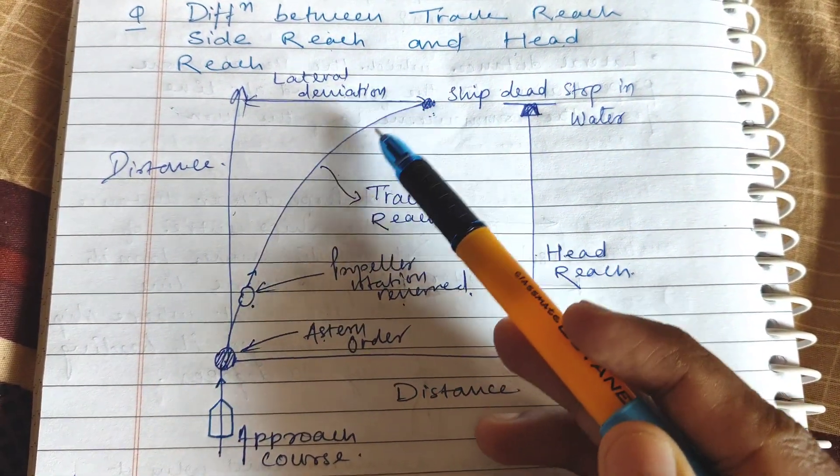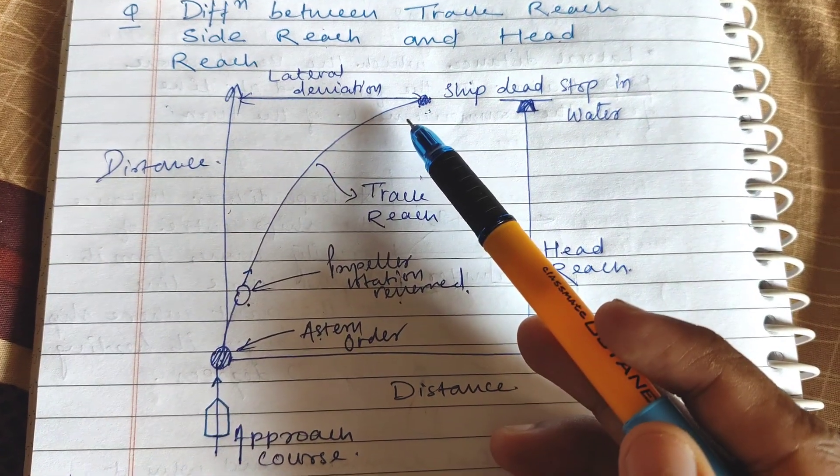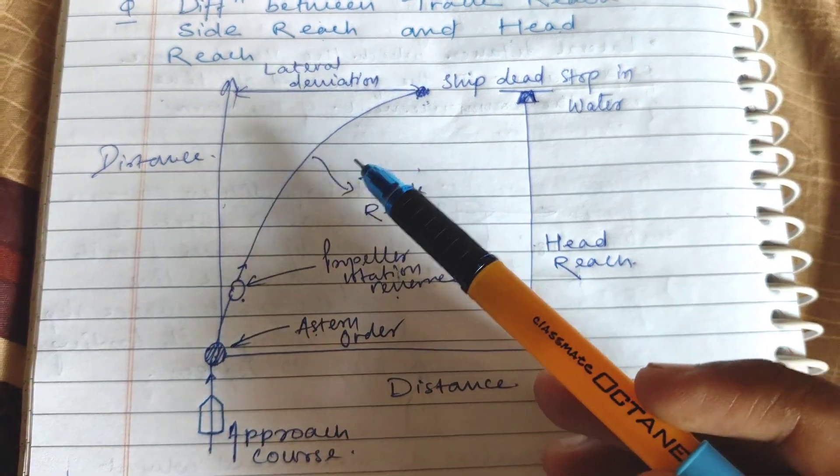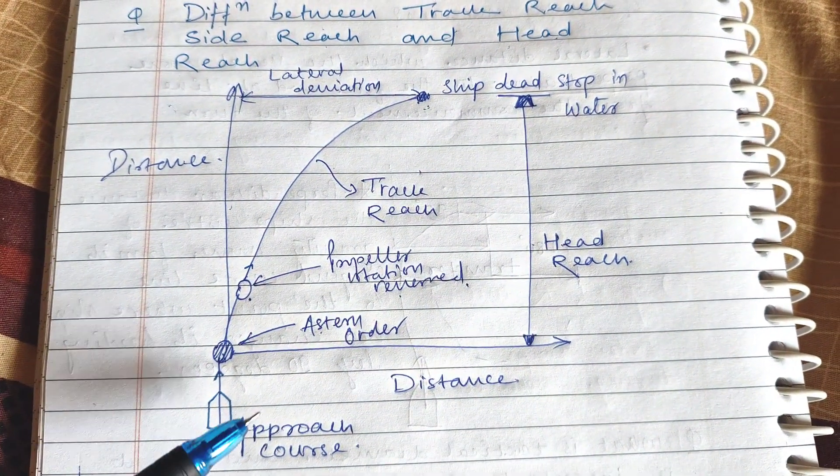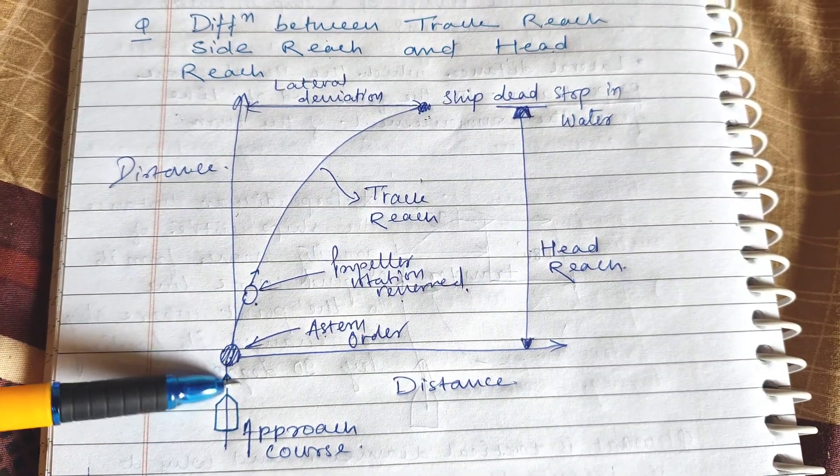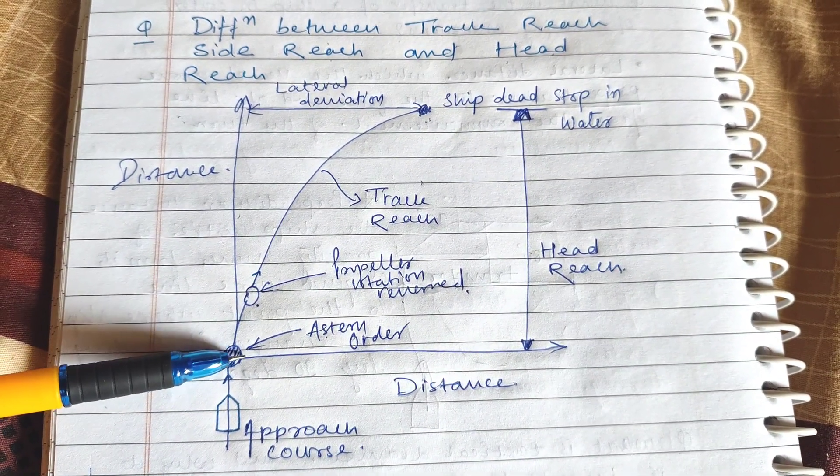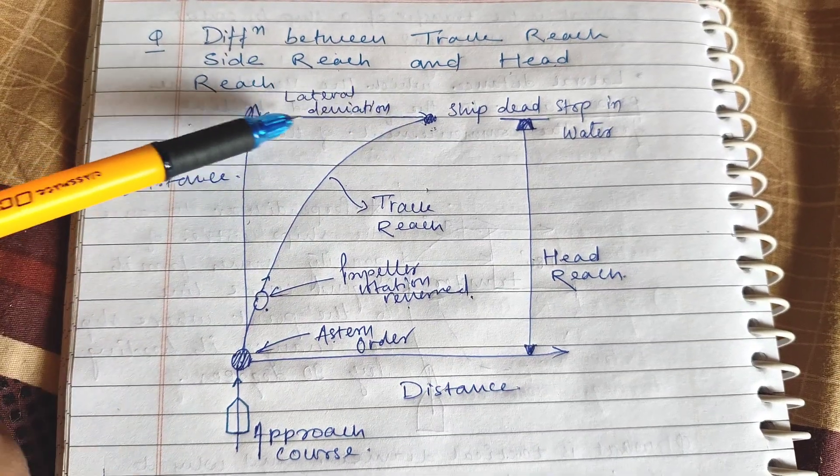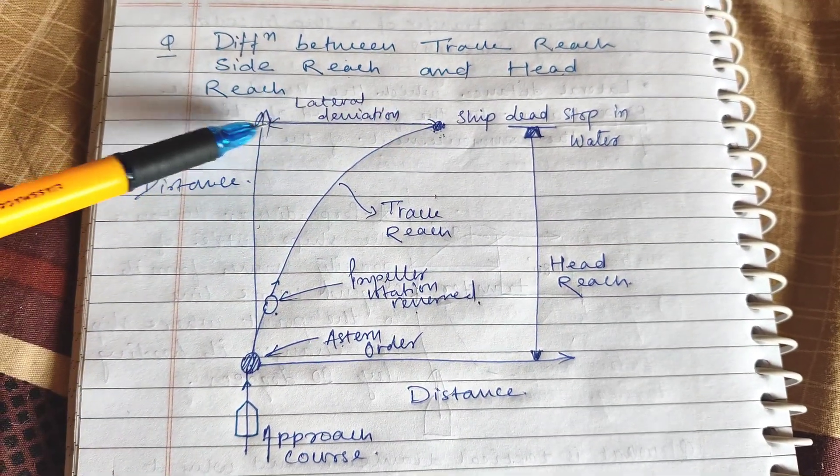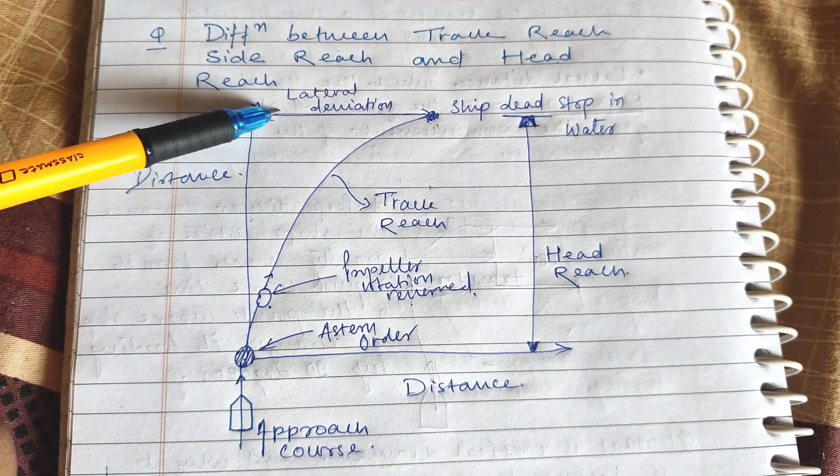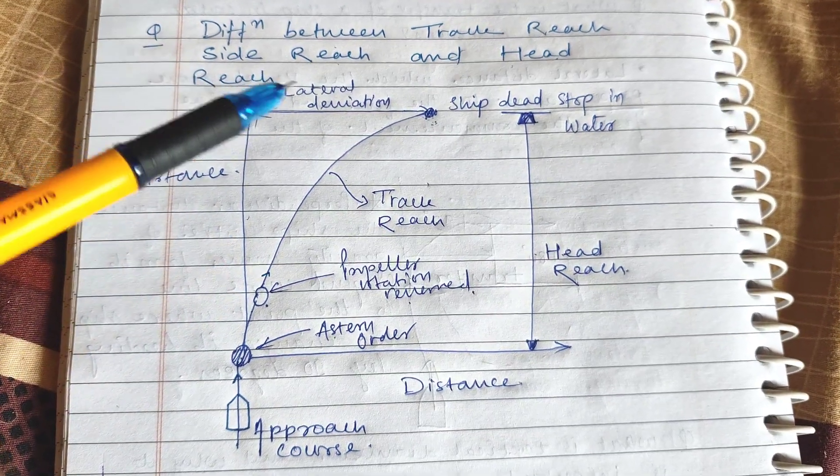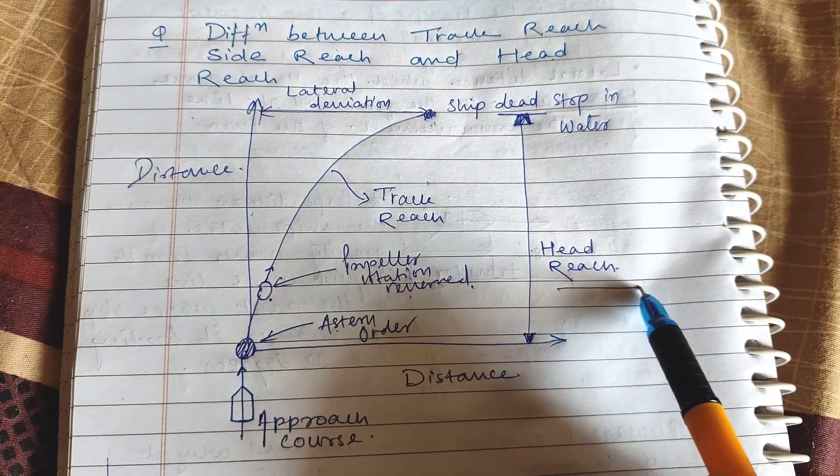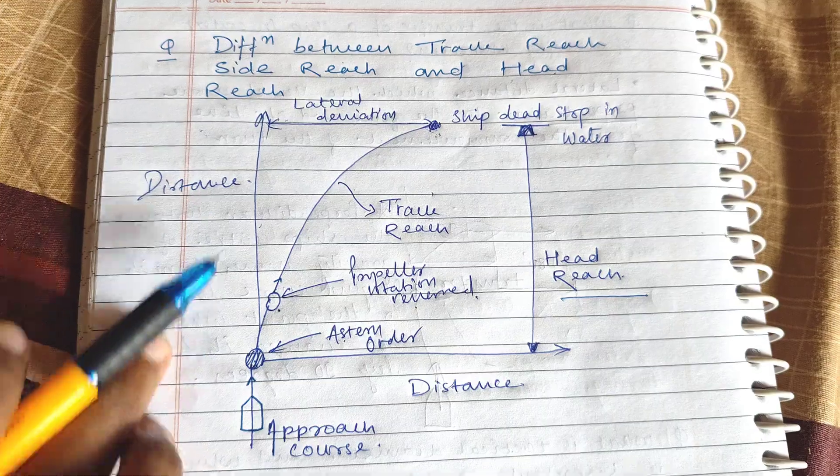This curled path is known as track reach, and the distance along the original heading from full astern order to where the ship is dead stop—this distance is known as head reach, and it is straight ahead.